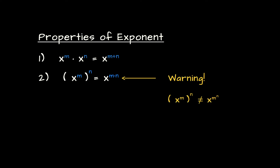It's important to understand that parentheses play a very important role in this notation. The expression x to the power m in parentheses, raised to the power n, is one to which property 2 applies — but note that this is not equal to x to the m to the power n without parentheses, which is usually a very different number. For example, 2 to the power 10 in parentheses raised to the power 3 is, by our property, 2 to the power 30.